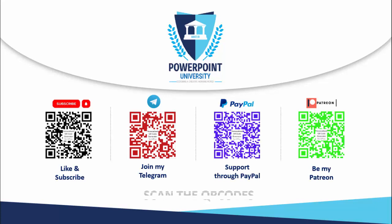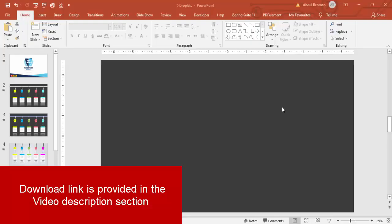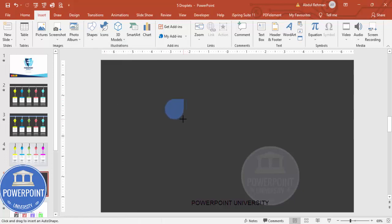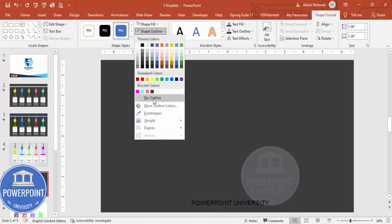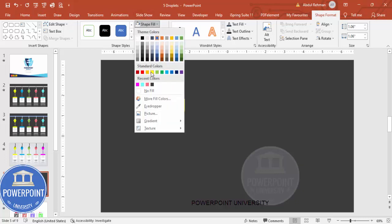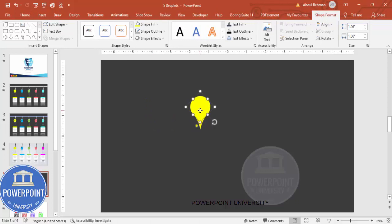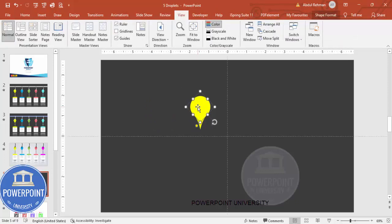Let's start the tutorial. Add a new slide and change the background to a dark color if you need a dark theme. Go to Insert > Shapes and from the basic shapes choose the teardrop. Draw a small teardrop by holding the Shift key. Set shape outline to no outline, and give any fill color — I'll use yellow. Then rotate it using Alt and the right arrow key so it points downward. Drag the orange handle to adjust the shape, then enable guides from the View menu and center it exactly in the middle.